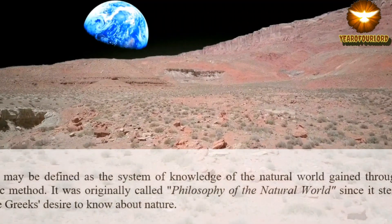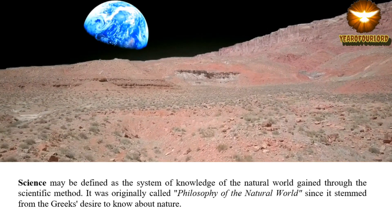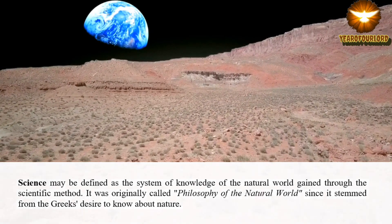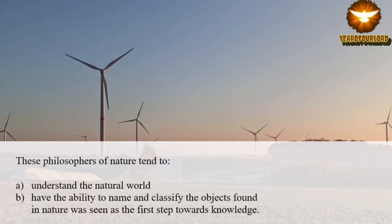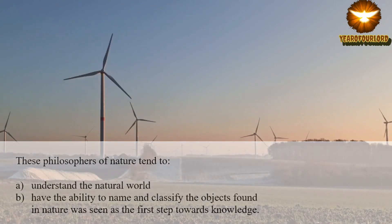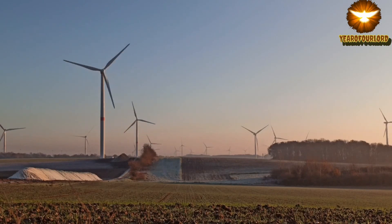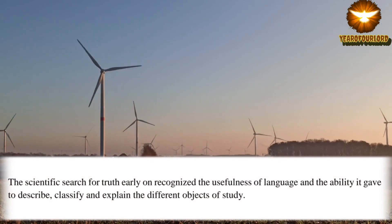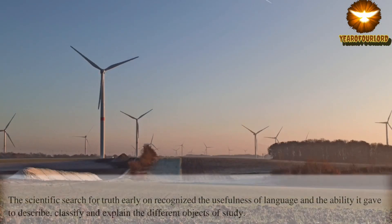Science may be defined as the system of knowledge of the natural world gained through the scientific method. It was originally called philosophy of the natural world, since it stemmed from the Greeks' desire to know about nature. These philosophers of nature sought to understand the natural world, and the ability to name and classify the objects found in nature was seen as the first step towards knowledge. The scientific search for truth early on recognized the usefulness of language and the ability it gave to describe, classify, and explain the different objects of study.